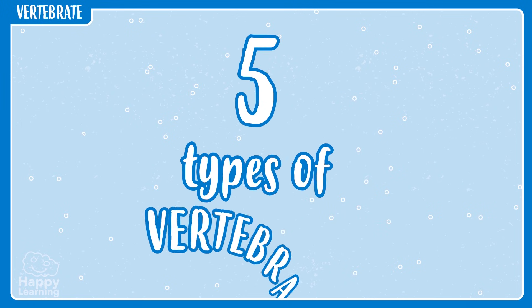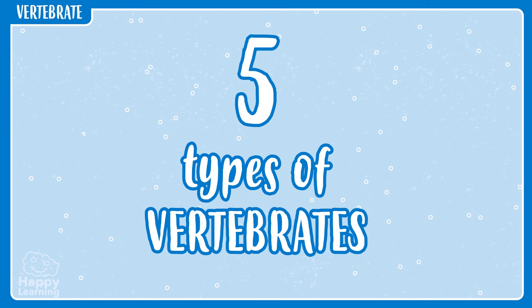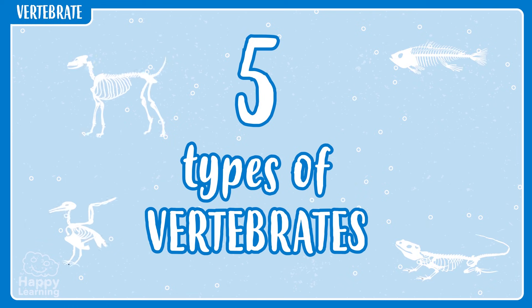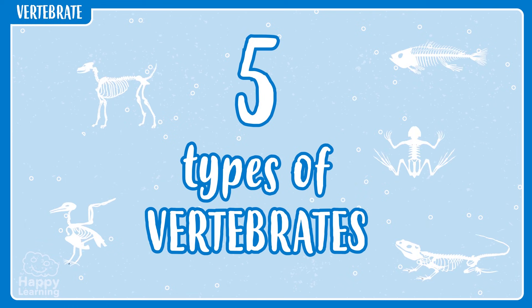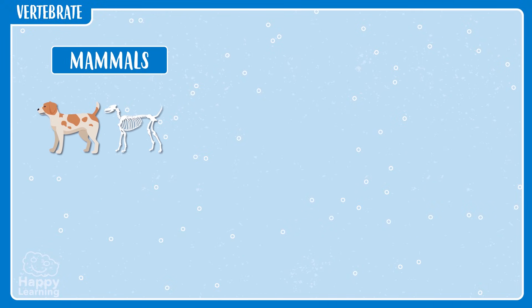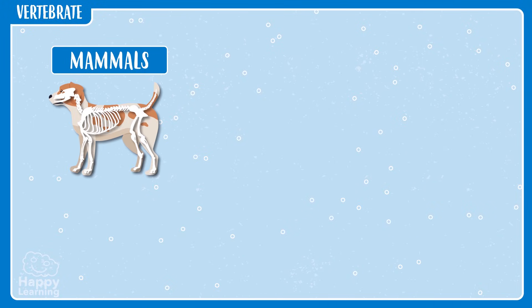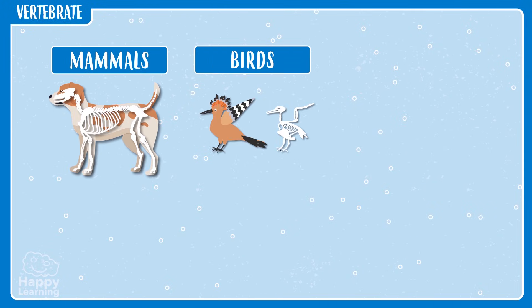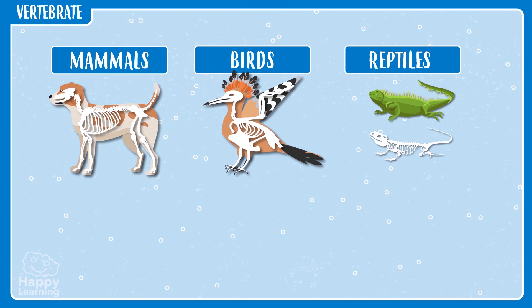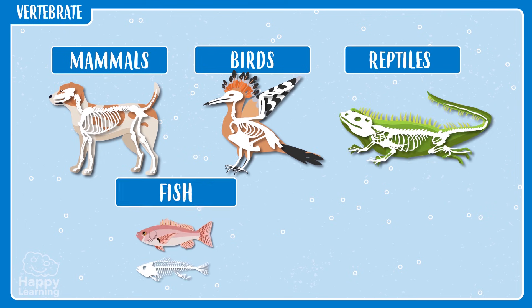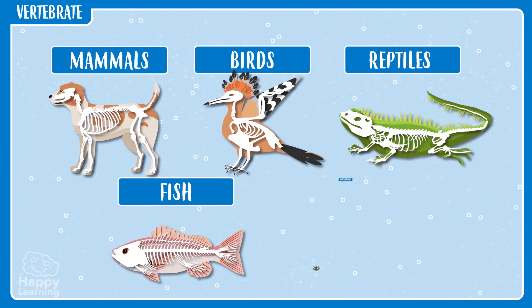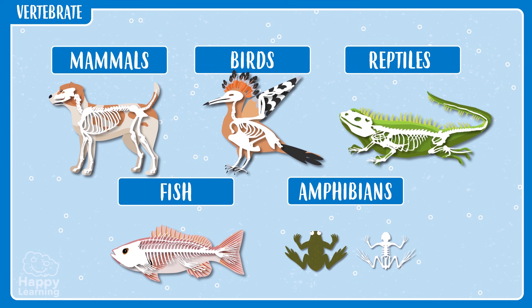Remember, there are five types of animals that have bones — five types of vertebrates: mammals, birds, reptiles, fish, and amphibians.